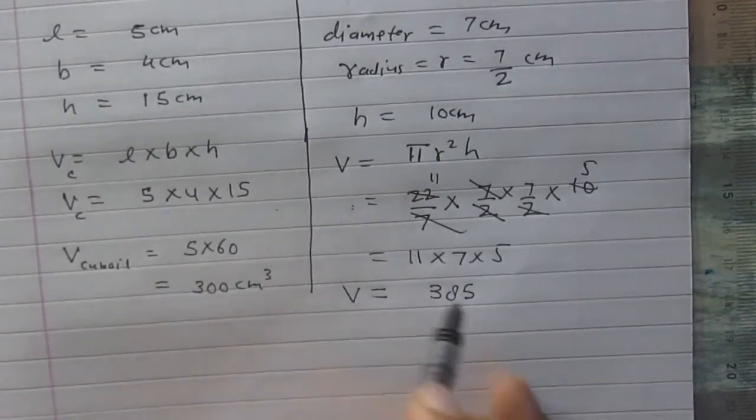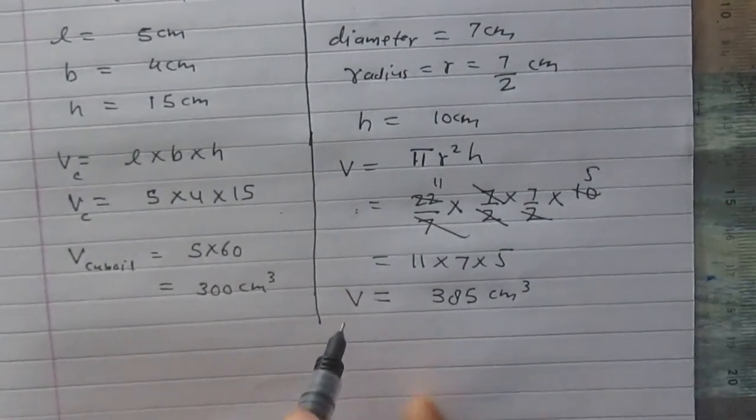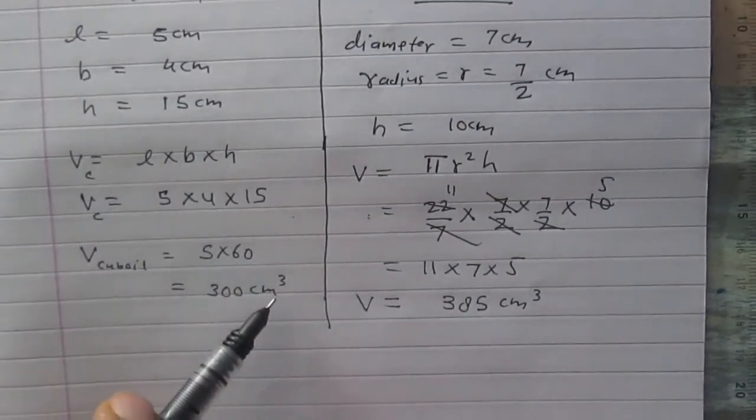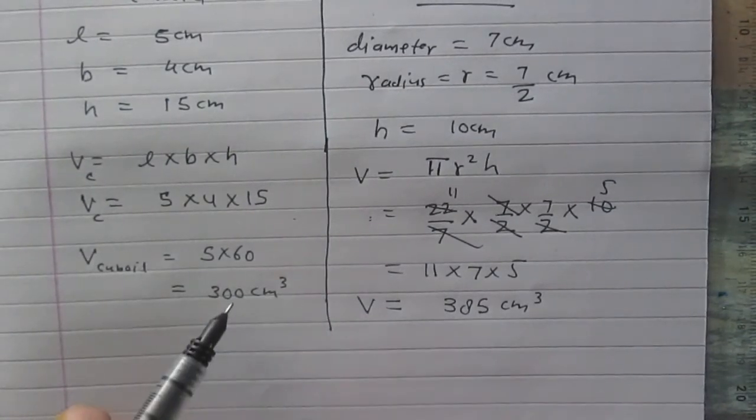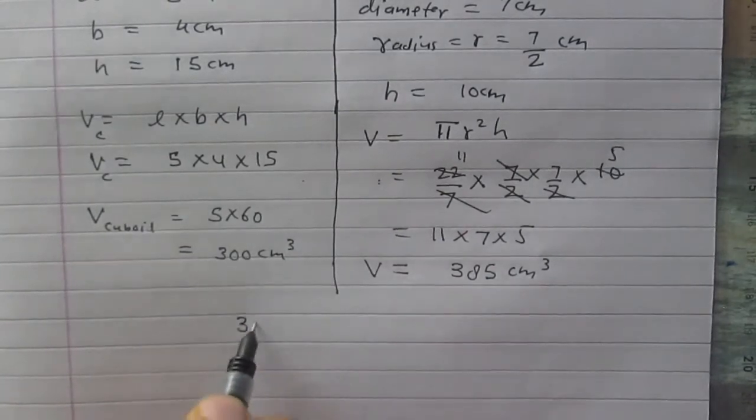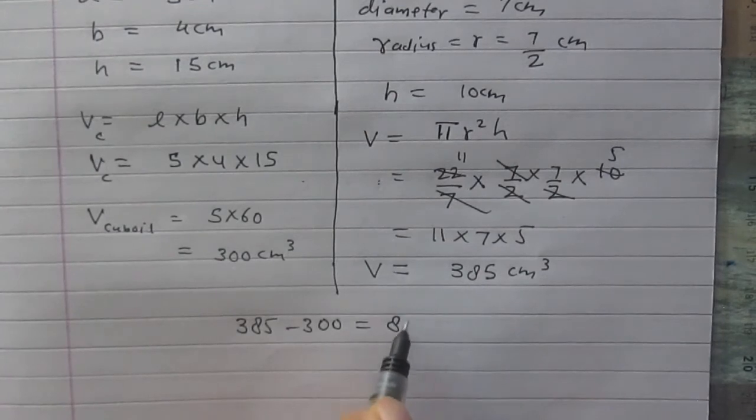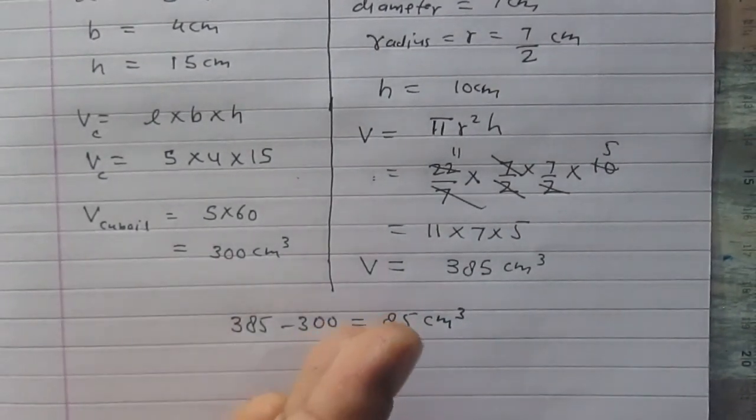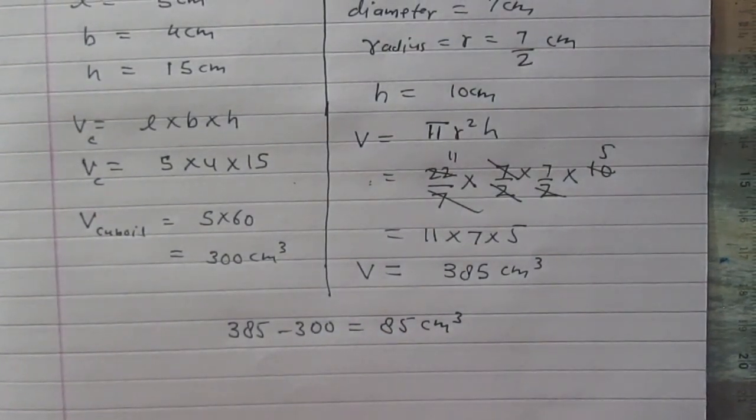The volume of the cylinder is 385 cm³ and the volume of the cuboid is 300 cm³. So clearly the cylinder has greater volume than the cuboid. By how much? We calculate 385 minus 300, which equals 85 cm³. So the volume of the cylinder is greater by 85 cm³.